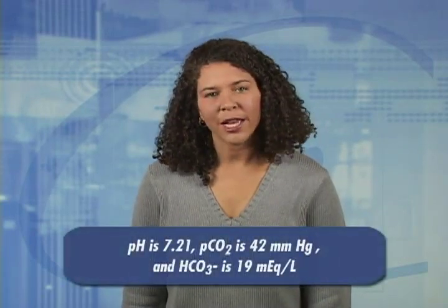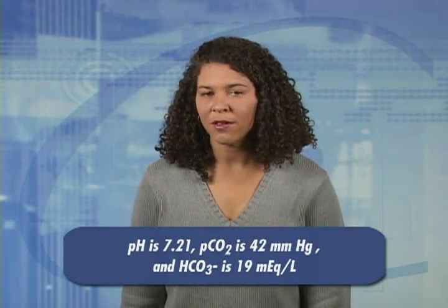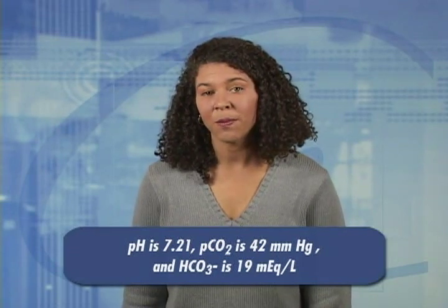Let's practice this evaluation process. In example number one, pH is 7.21, PCO2 is 42 mmHg, and HCO3 is 19 mEq/L. Since the pH is less than 7.35, the client has acidosis. Do I have a source of respiratory acid? The answer is no — excess respiratory acid would be manifested by a PCO2 greater than 45 mmHg. Do I have a source of metabolic acid? Yes — the HCO3 of 19 mEq/L correlates with a metabolic source of acid. Is there any evidence of compensation? No. The compensatory change would follow the direction of the primary change: a drop in HCO3 would be followed by a decrease in PCO2. Since there is no compensatory change, this is interpreted as acute metabolic acidosis.